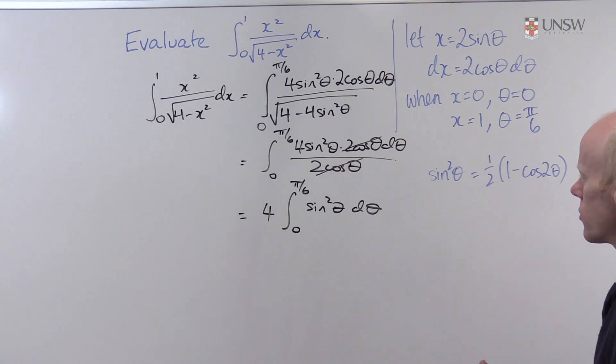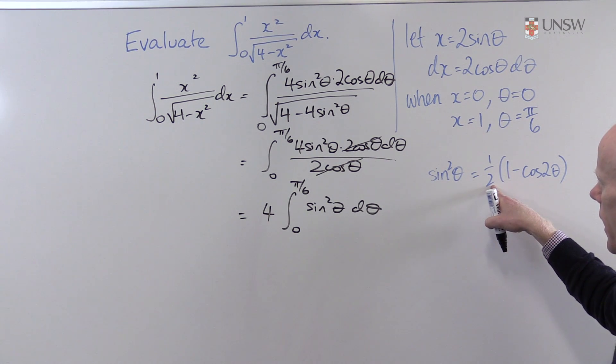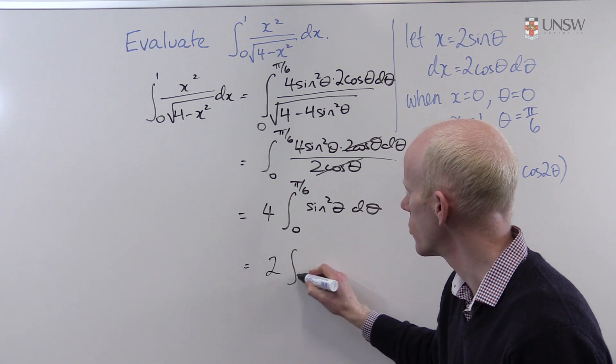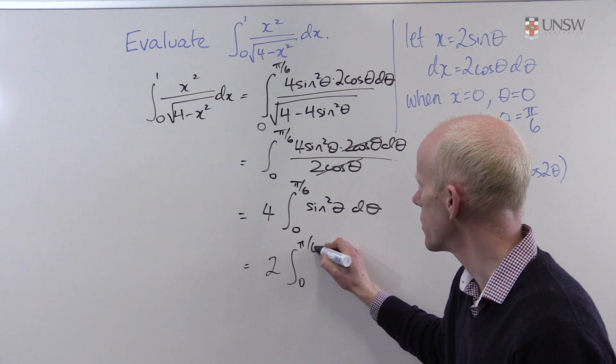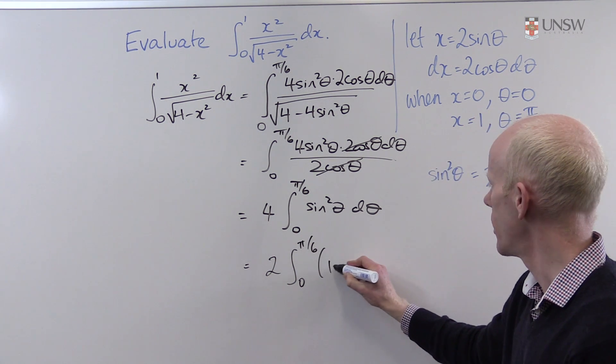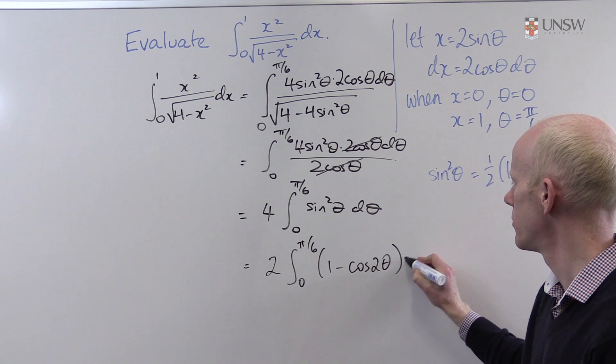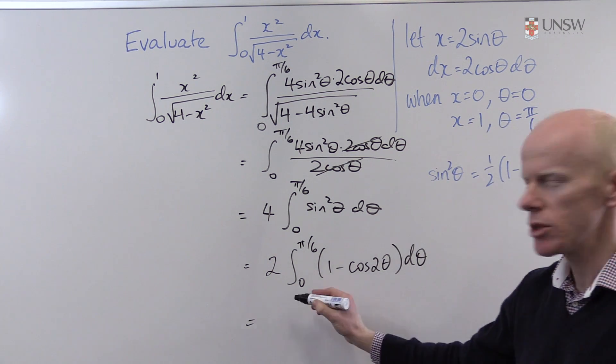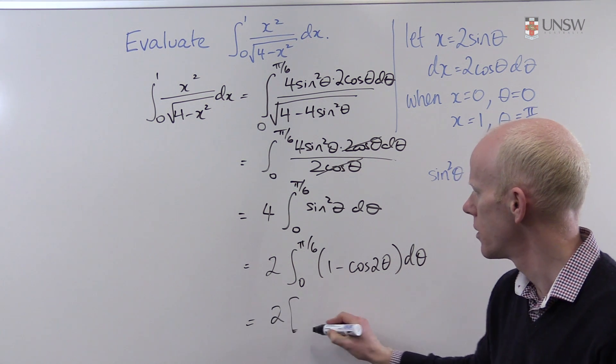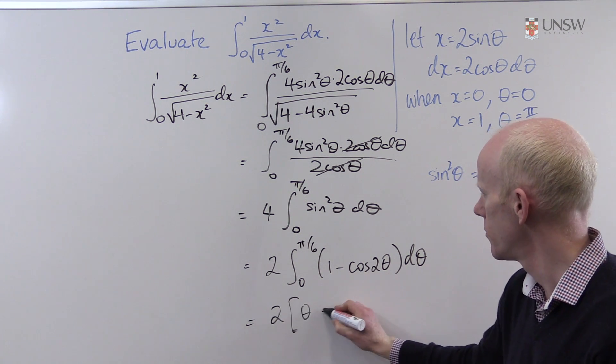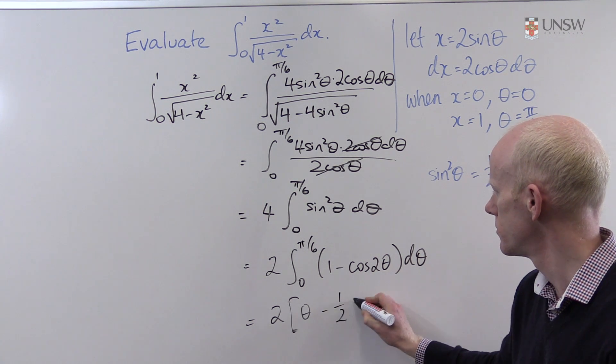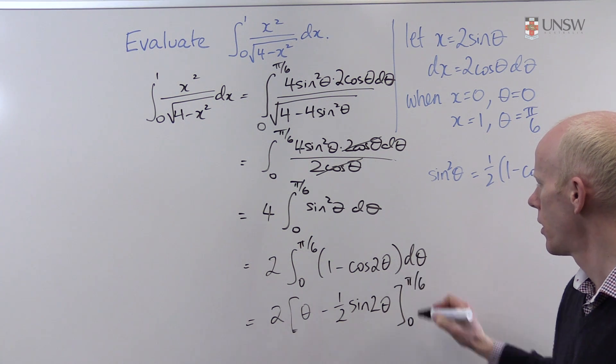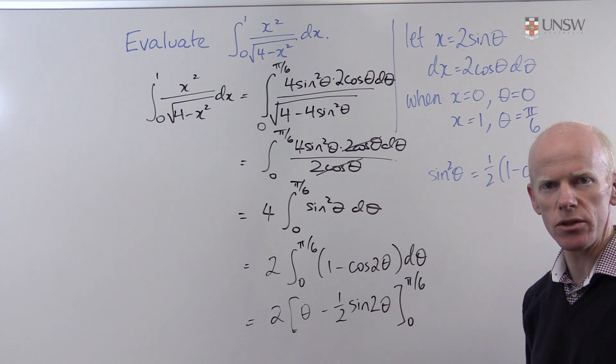So I can rewrite my integral, incorporating this half, as 2 times the integral from 0 to π/6 of (1 - cos 2θ) dθ. This allows me to integrate, making sure that I leave in the limits of integration.